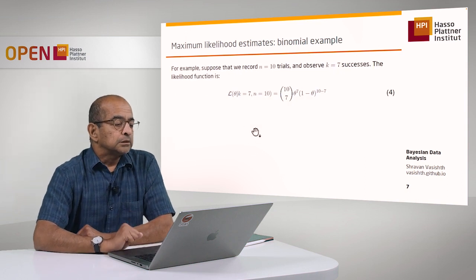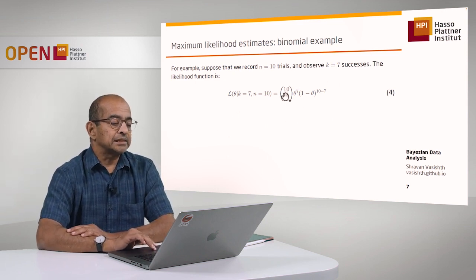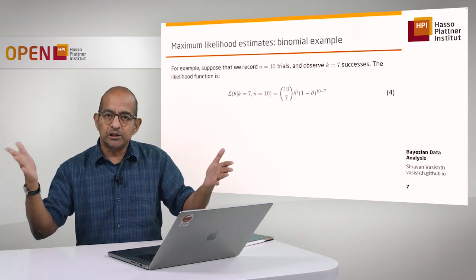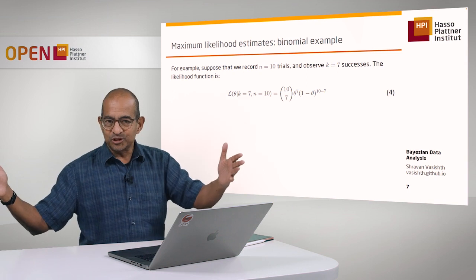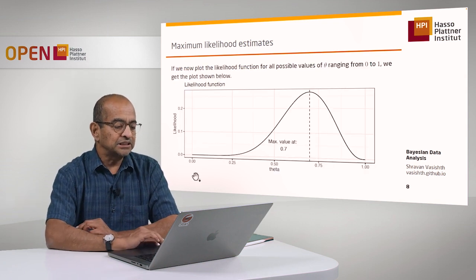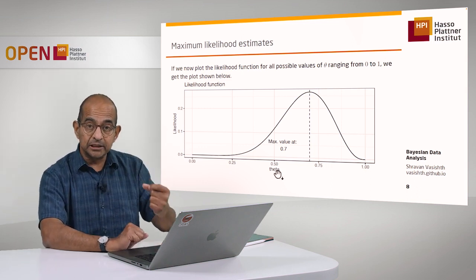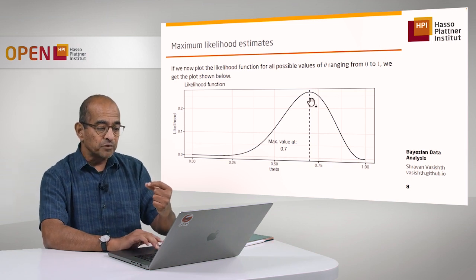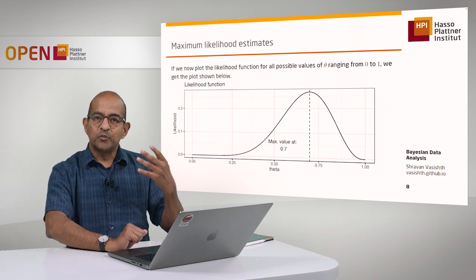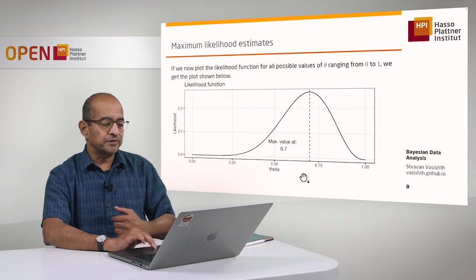Suppose we run 10 trials and get seven successes. In that case the likelihood function has n and k fixed, and only theta is varying. I can plot this function — theta can only have values between 0 and 1. If I plot this function as a function of theta, what you will notice for this particular data is that the maximum point of this likelihood function is at 0.7. And 0.7 was the estimate we got of theta from the expectation formula: 7 out of 10.